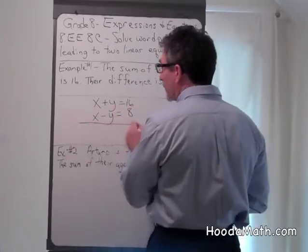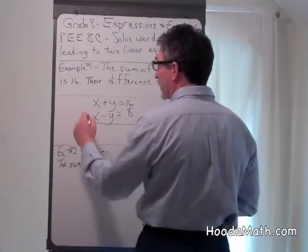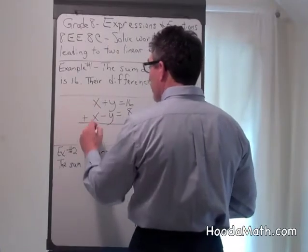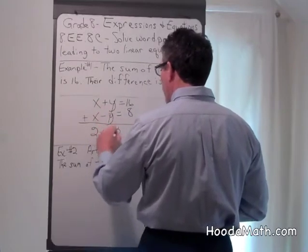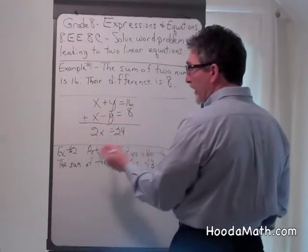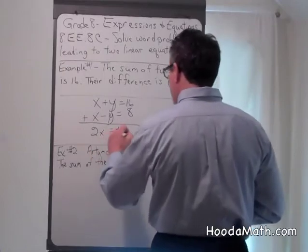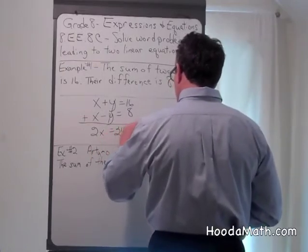We can use elimination to solve for x. 2x, these will be eliminated, equals 24. We divide both sides by 2, x equals 12.